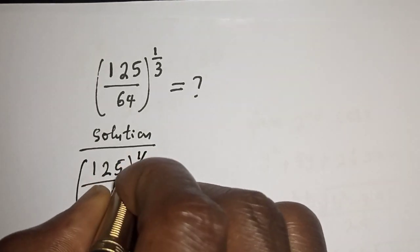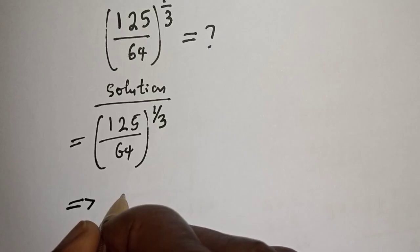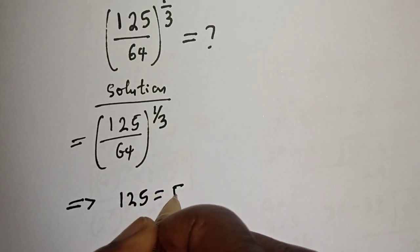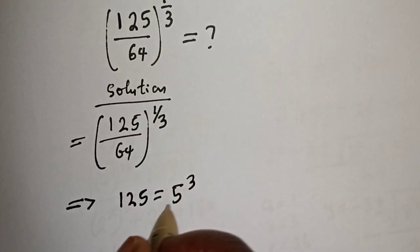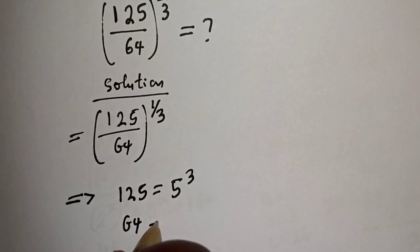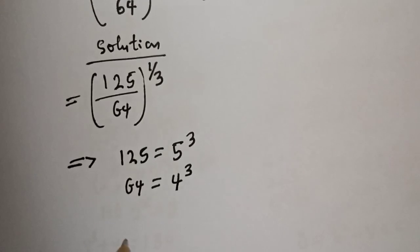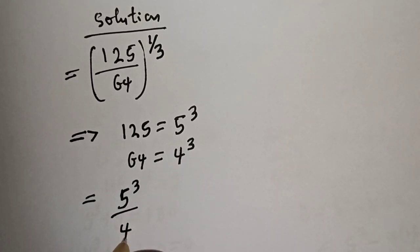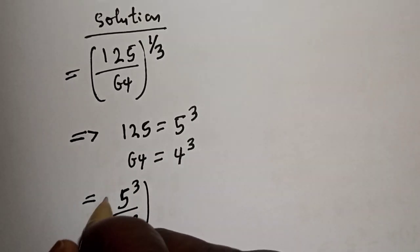125 is equal to 5 raised to power 3, and 64 is equal to 4 raised to power 3. This is equal to 5 raised to power 3 over 4 raised to power 3, to the power of 1 over 3.